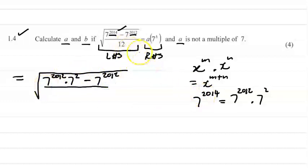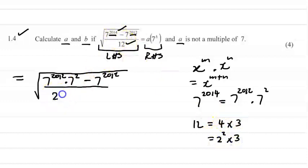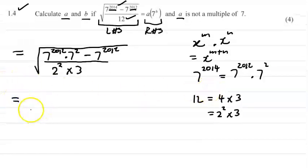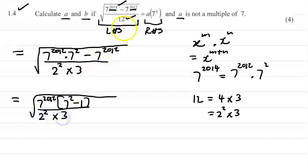For the denominator 12, we also want to write it as a product of its prime factors. 12 equals a perfect square times a prime number: 4 times 3, so 2 squared times 3. Now we're left with 7 to the 2012 as a common factor, and the numerator bracket becomes 7 squared minus 1, all over 2 squared times 3, which is 12.